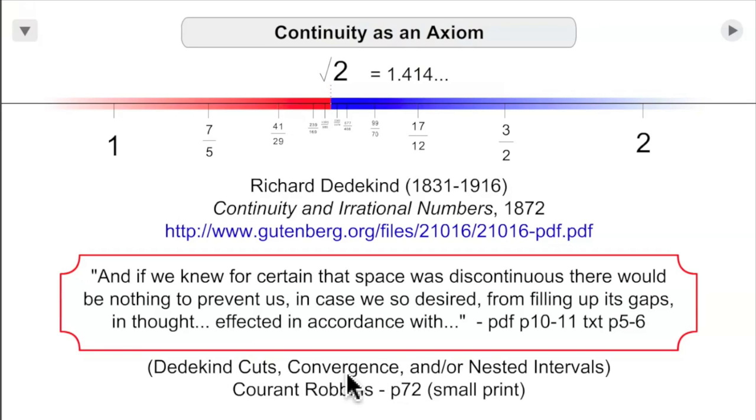And according to Courant Robbins, you could use Dedekind cuts, convergence, which was Cantor's terminology, and or nested intervals. He states they're more or less equivalent for this purpose of proving continuity of the number line.